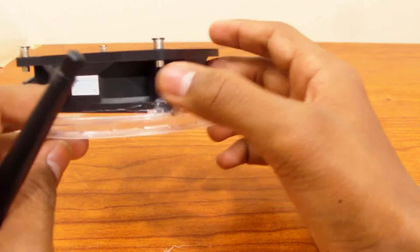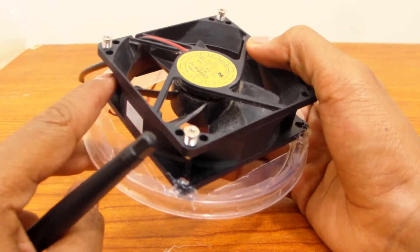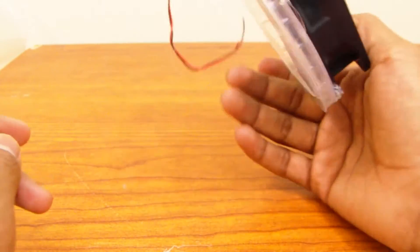There will be an arrow around here somewhere but this one doesn't have it. It usually tells the direction the fan spins and the direction the air flows out from.